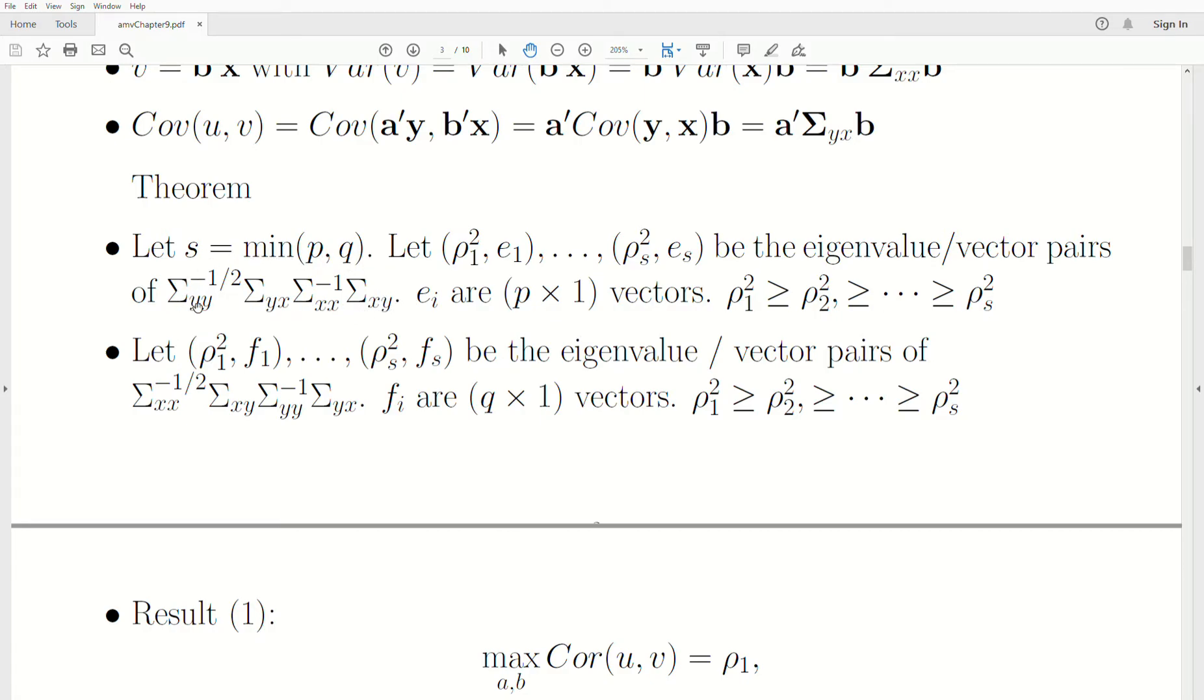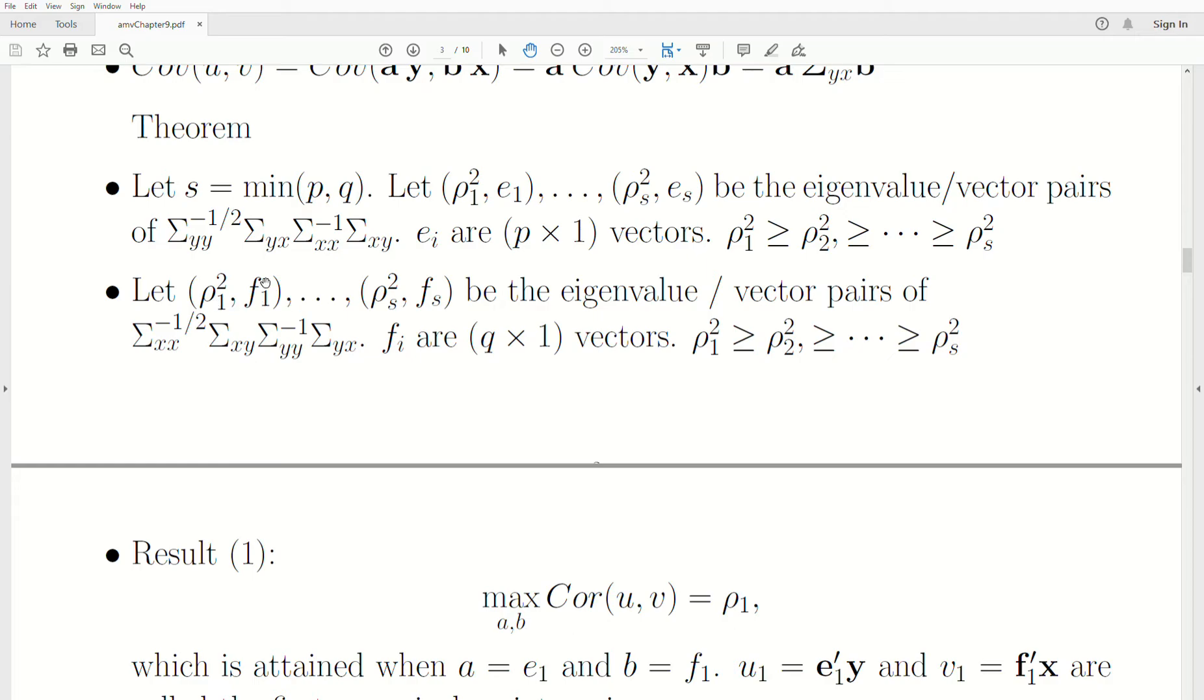All right. Now, let's look at the dimensions of this. Y is p. So this is a p by p matrix. This matrix, the second one, sigma YX, is a p by q. This is a q by q. This one is a q by p. So it's a p by p matrix. So the eigenvectors, ei, are p by 1 vectors. And then, of course, the eigenvalues, we always sort. So rho 1 squared is the largest.